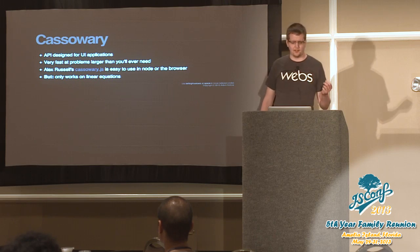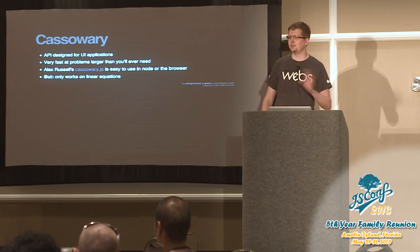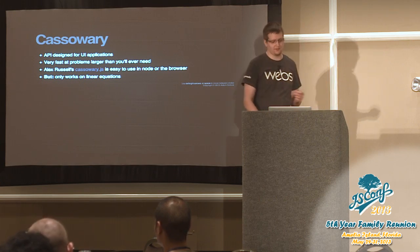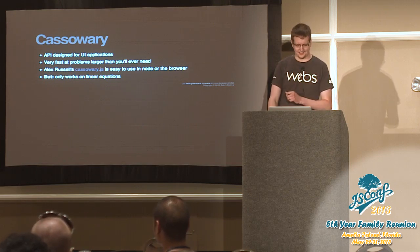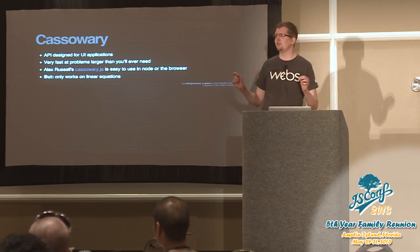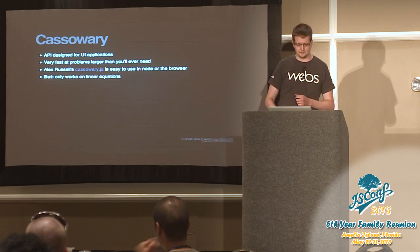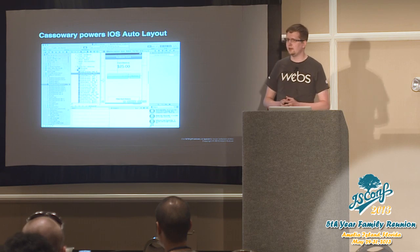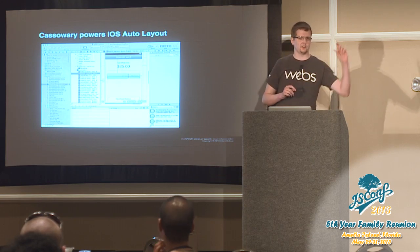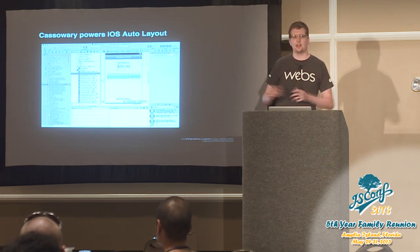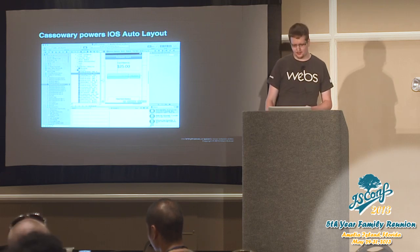Cassowary is a fantastic library for doing constraint programming in JavaScript. The API was designed specifically for user interface applications. It is really fast — fast at problems much harder than you would possibly need on a web page in JavaScript. There's a really great version available: Alex Russell's cassowary.js. You can install via npm, you can include it in the browser, and it's fantastic. The one limitation with Cassowary is it's so fast and so powerful precisely because it has a very limited scope — it only works on linear equations, so variables have to be numbers and relationships have to be just adding and multiplying. If you know the name Cassowary, you've probably heard of it from iOS auto layout — a C version of the Cassowary algorithm now powers laying out applications in iOS, letting you say keep this border 20 pixels from the left side of the screen. There are so many examples of using Cassowary for layout — I'm not going to talk about that. Let's look at something more interesting we can do with it.